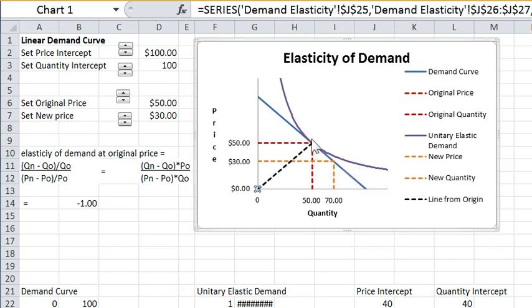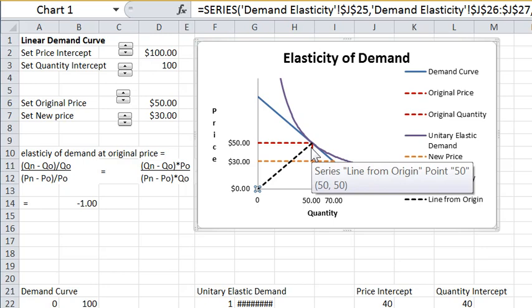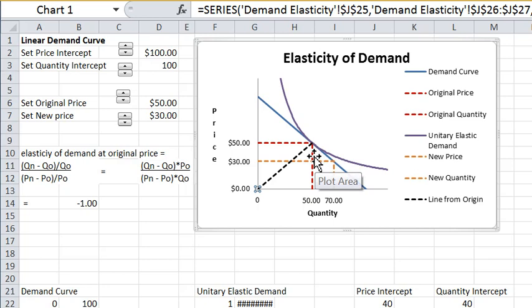Notice that at this point the unitary elastic demand curve is actually tangent to the linear demand curve at that point. So you can get the relationship of the demand elasticity by looking at the unitary elastic demand curve through the same point and comparing the relative slopes of the two curves.